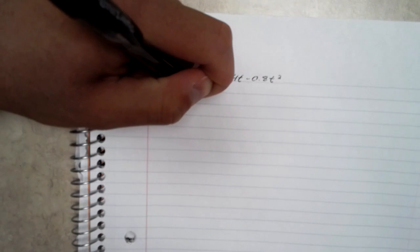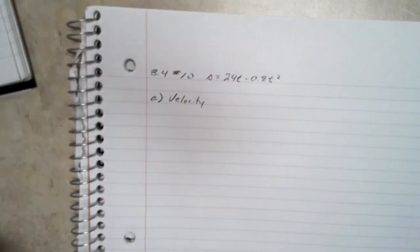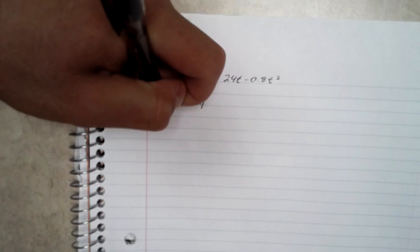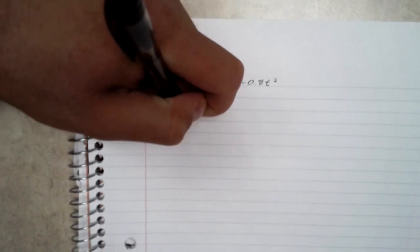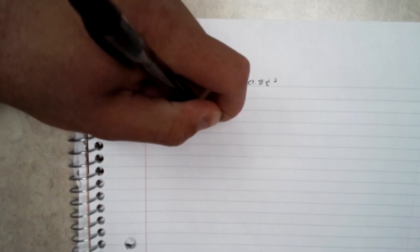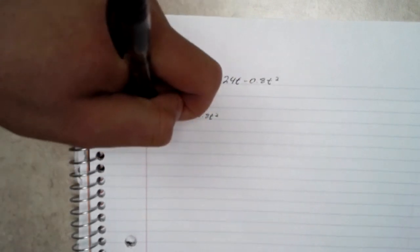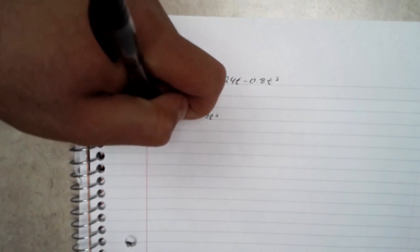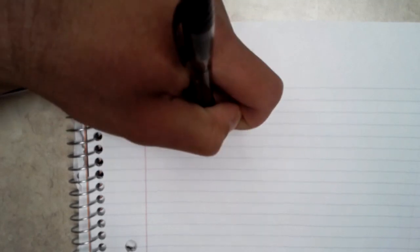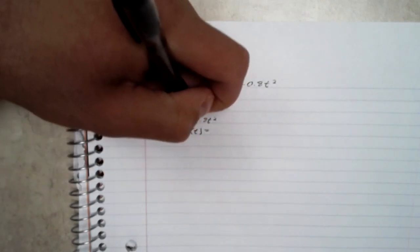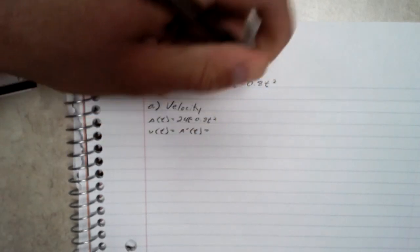So, velocity. As the position function, we have s equal to 24t minus 0.8t squared. The velocity function is going to be the derivative of our position function, which equals 24 minus 1.6t.